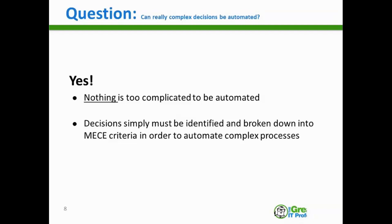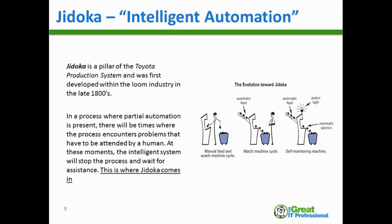Now let's get into what Jidoka is from a definition standpoint. It roughly translates to intelligent automation from the original Toyota Production System, and it was first invented in the loom industry that Toyota was running back in the late 1800s — well before Toyota was a car company, when they were more of a textiles magnate. In any process where partial automation is present...